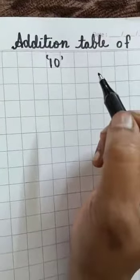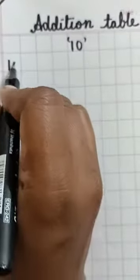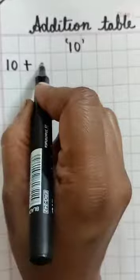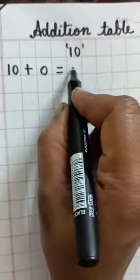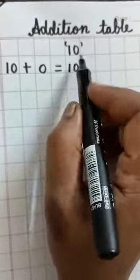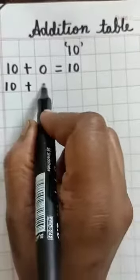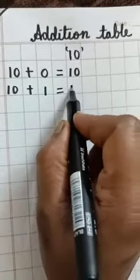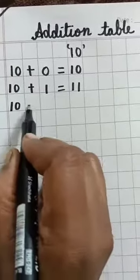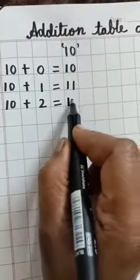Ok. Now, let's start. 10 plus 0 equal to 10. 10 plus 1 equal to 11. 10 plus 2 equal to 12.